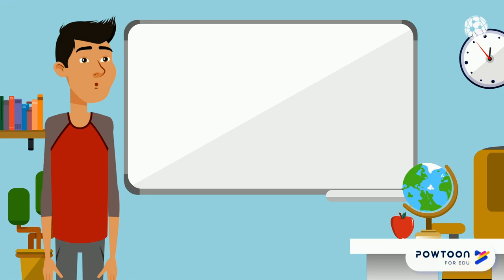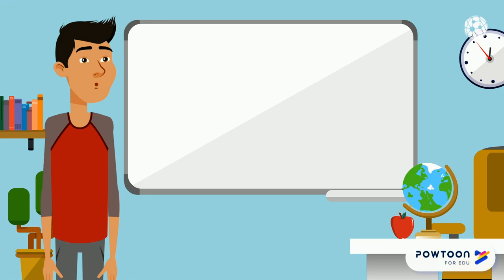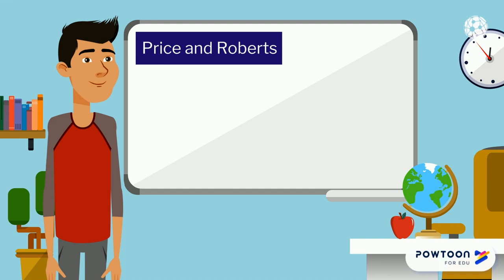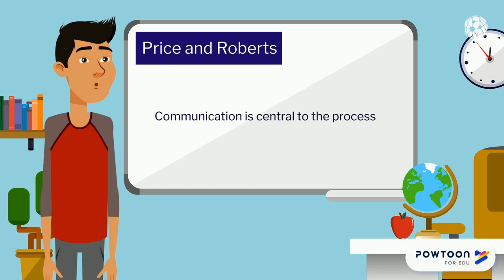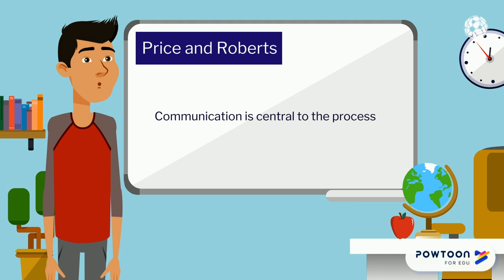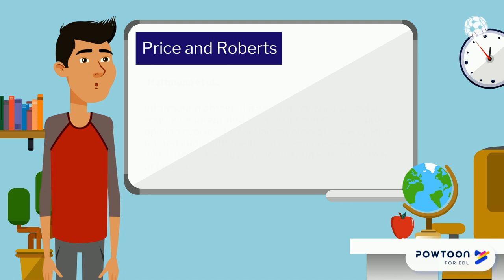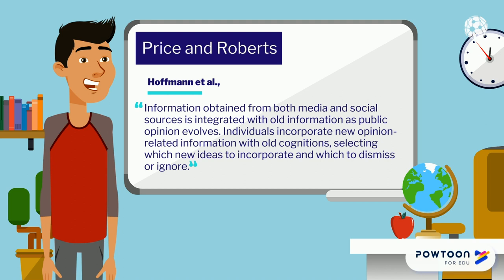Communication has received less attention as a central variable of the public opinion process. Price and Roberts divide the public opinion process into inter-level relations among individuals, groups, and organizations over time. Communication is central to the process even at the intrapersonal level, where the relationship between cognitions and behavior can be conceptualized as a continuing dialectic. According to Price and Roberts, information obtained from both media and social sources is integrated with old information as public opinion evolves. Individuals incorporate new opinion-related information with old cognitions, selecting which new ideas to incorporate and which to dismiss or ignore.